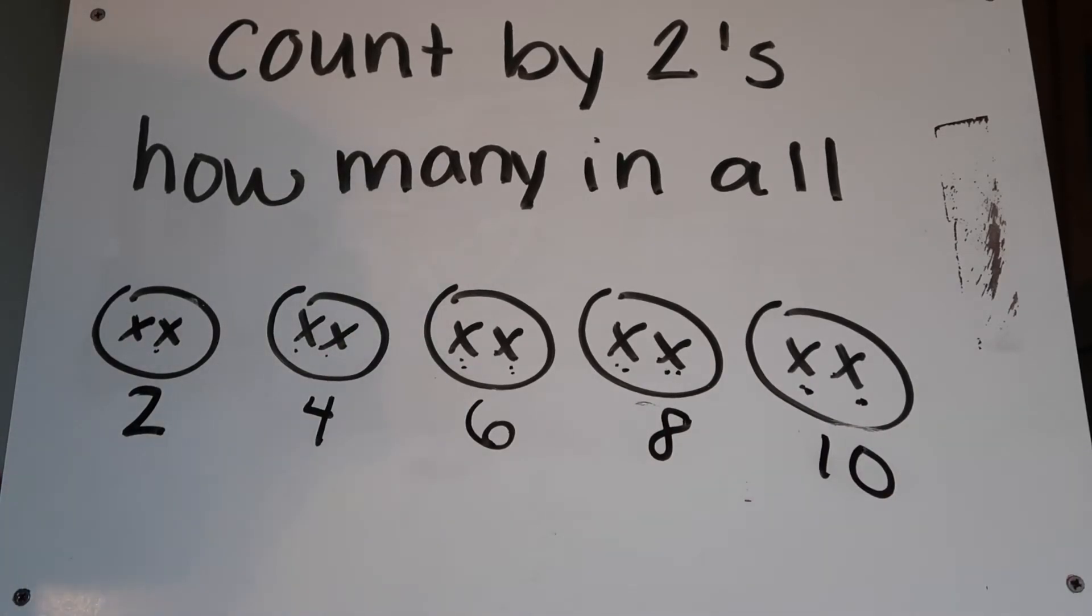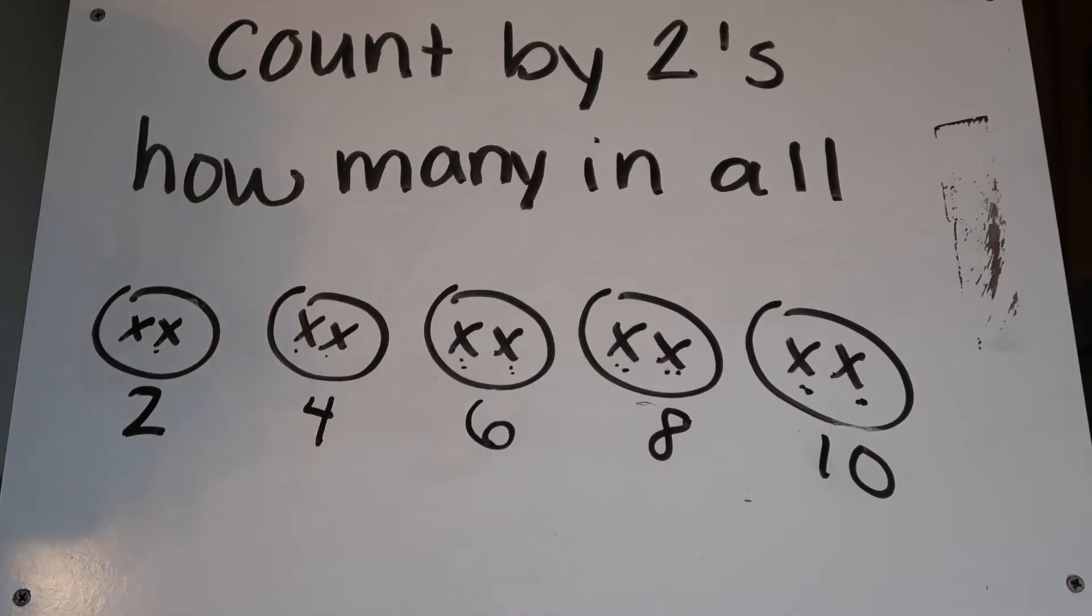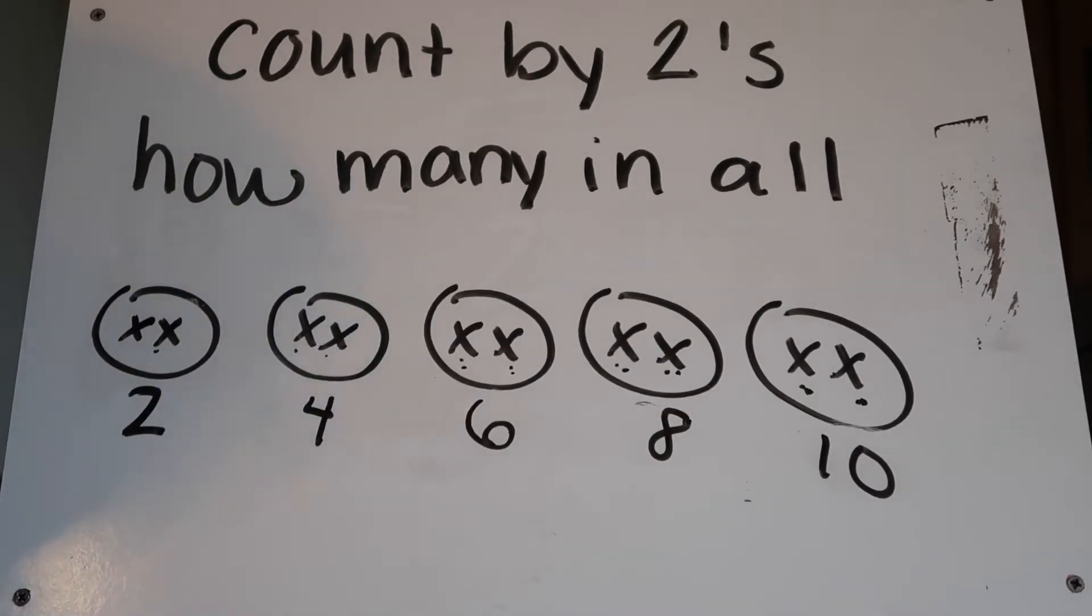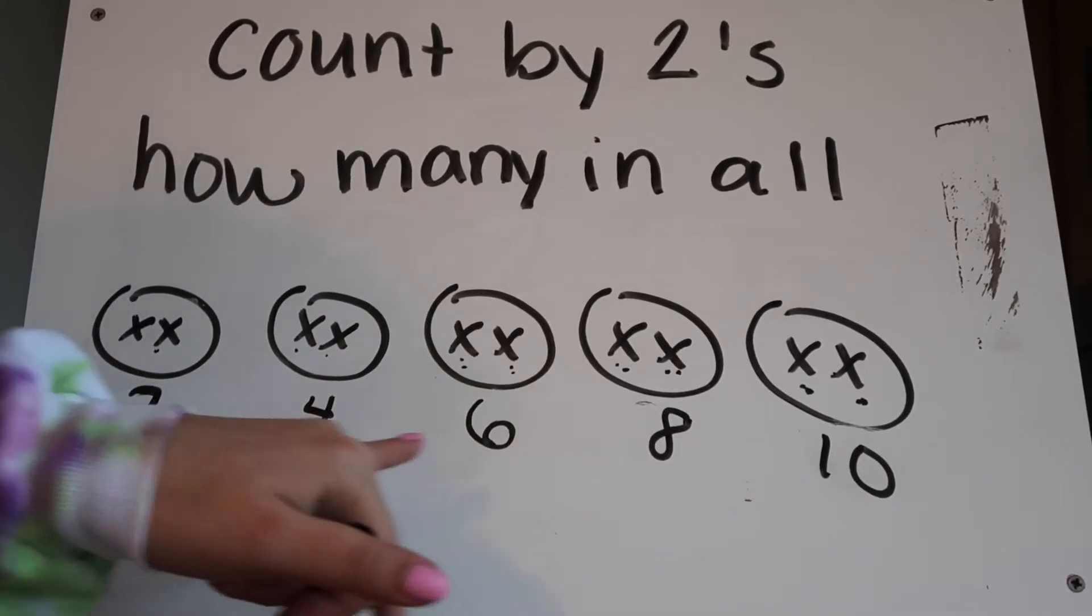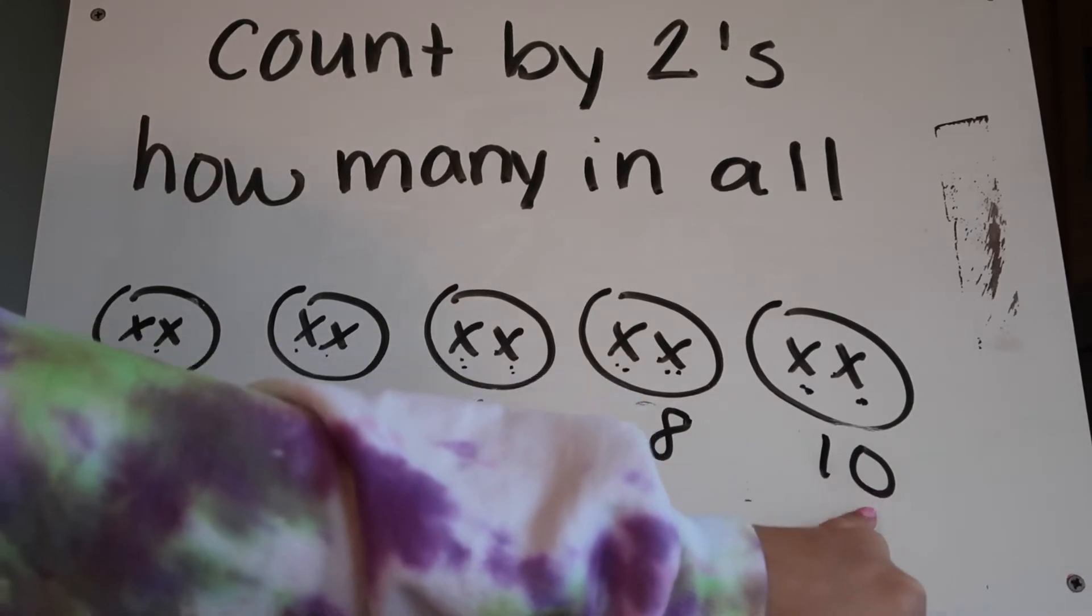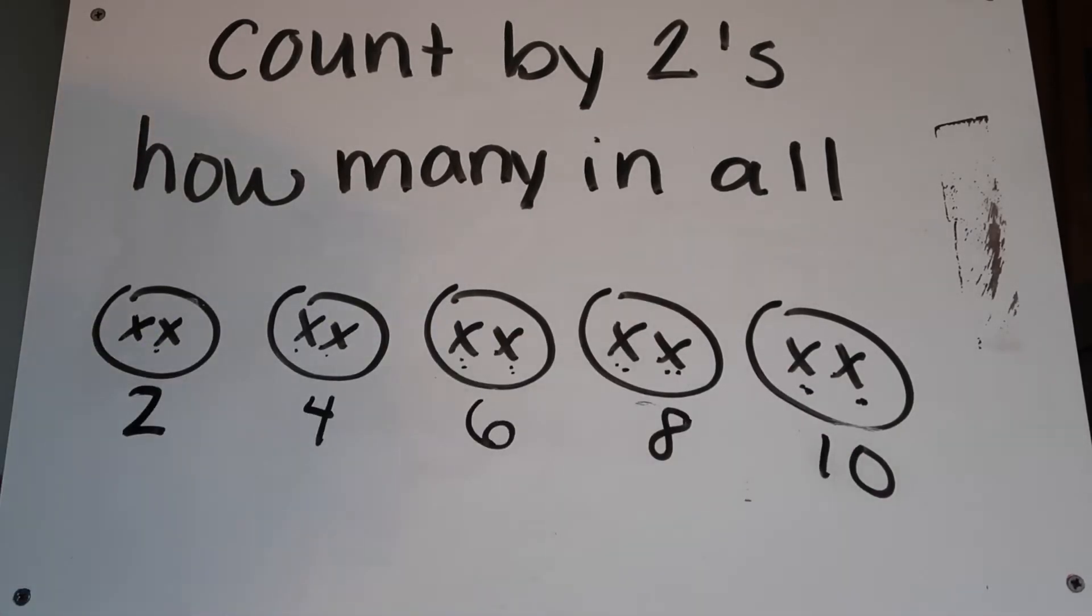If you notice, from the beginning of the year when we worked with even numbers and odd numbers, all of these numbers are even numbers. I'll give you a little trick: all your numbers when counting by twos are going to have a 2, 4, 6, 8, or 0 at the end. Any other numbers, you know it's not going to be right.